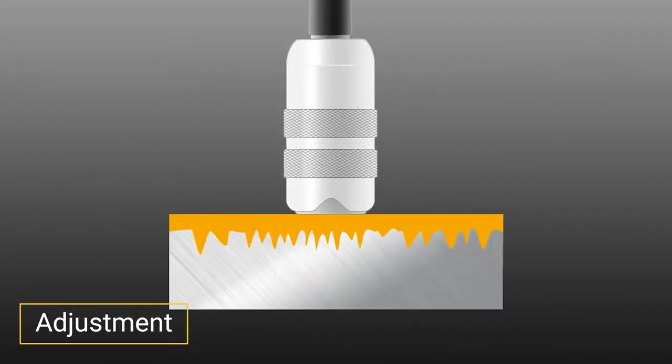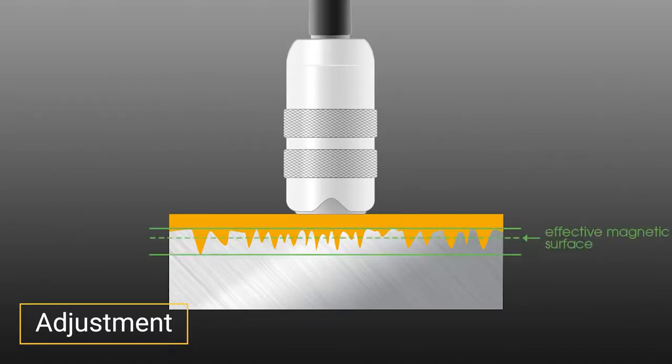Adjusting for surface profile presents a special challenge. The accepted industry practice is to measure coating thickness over the peaks of the profile, while profiling methods result in an effective magnetic surface that is somewhere between the peaks and valleys.